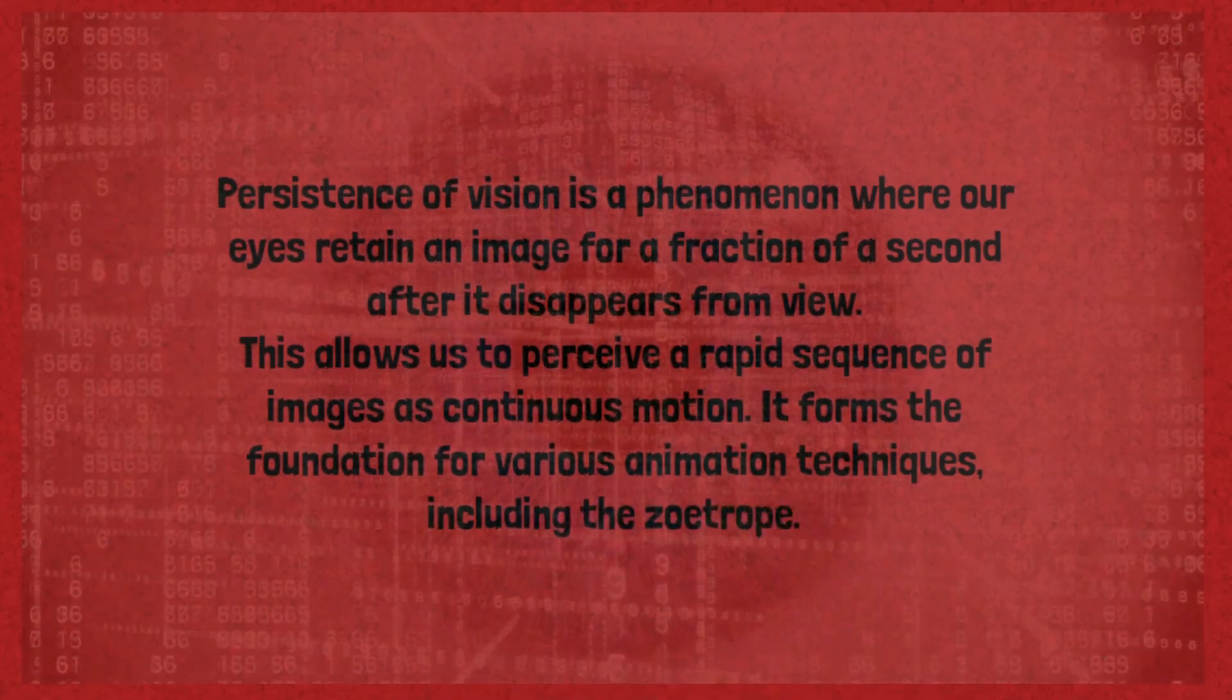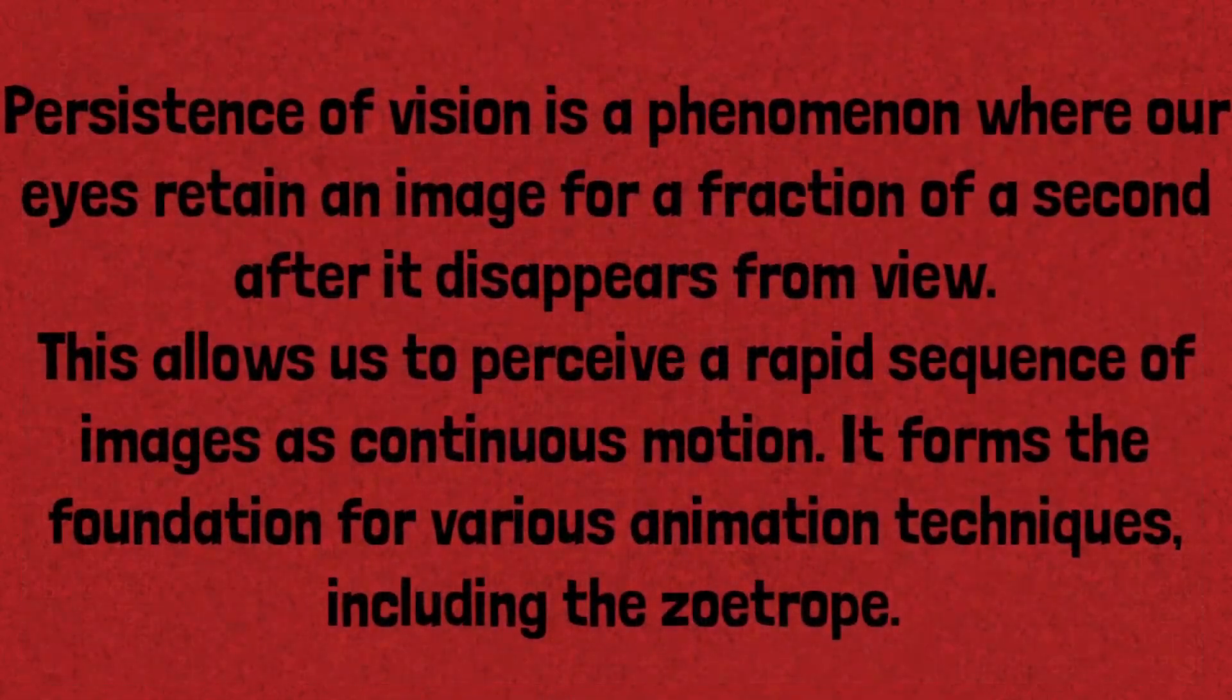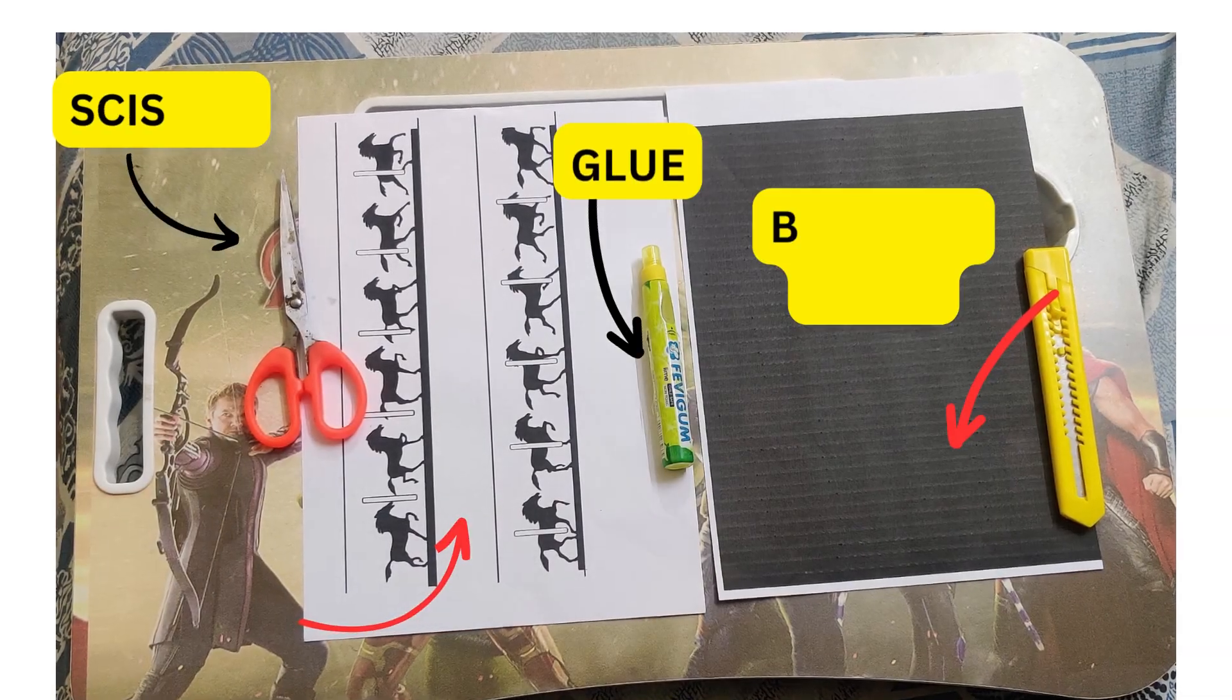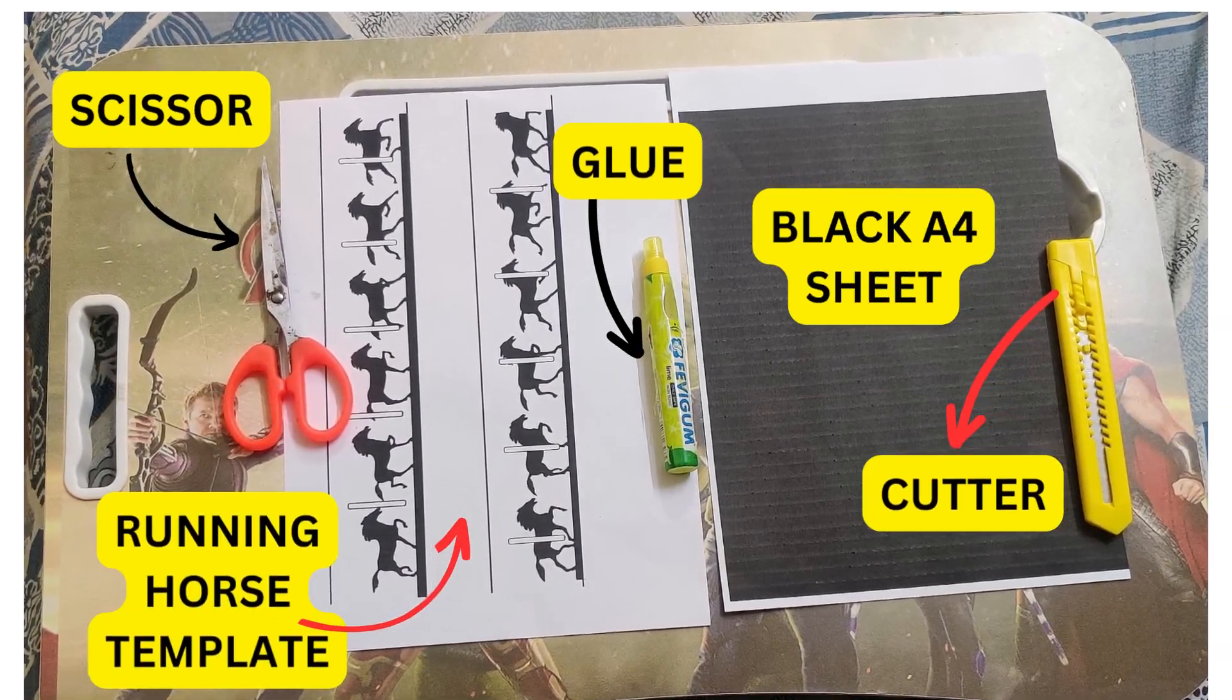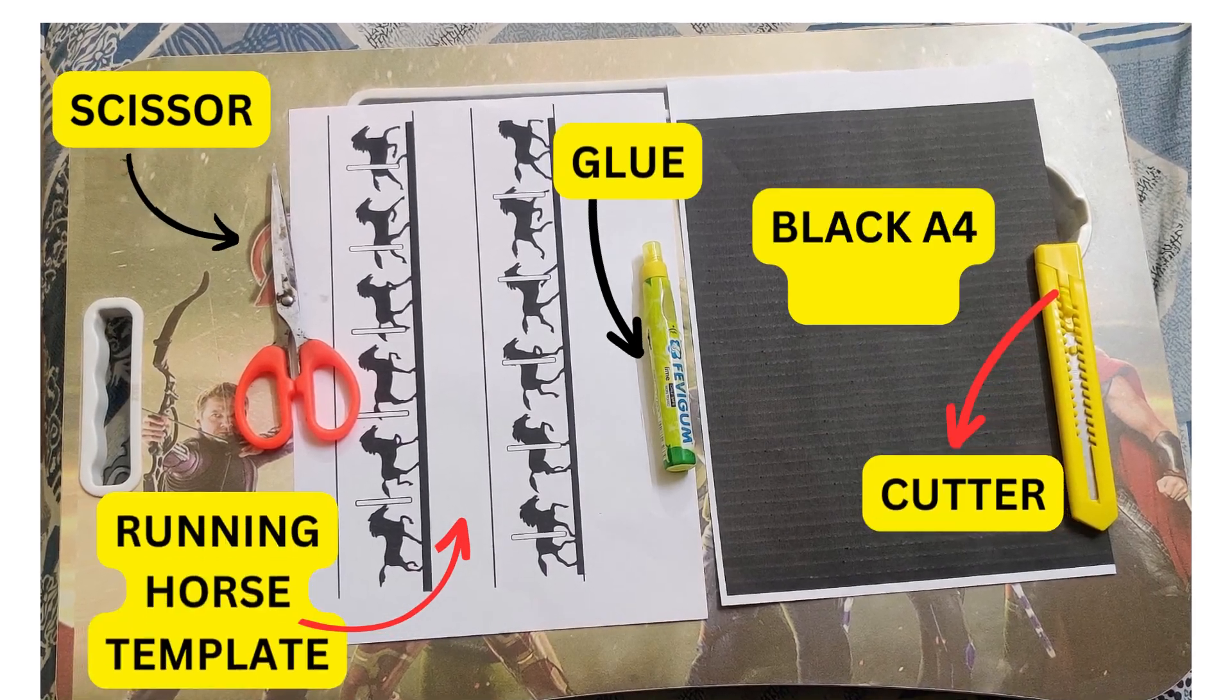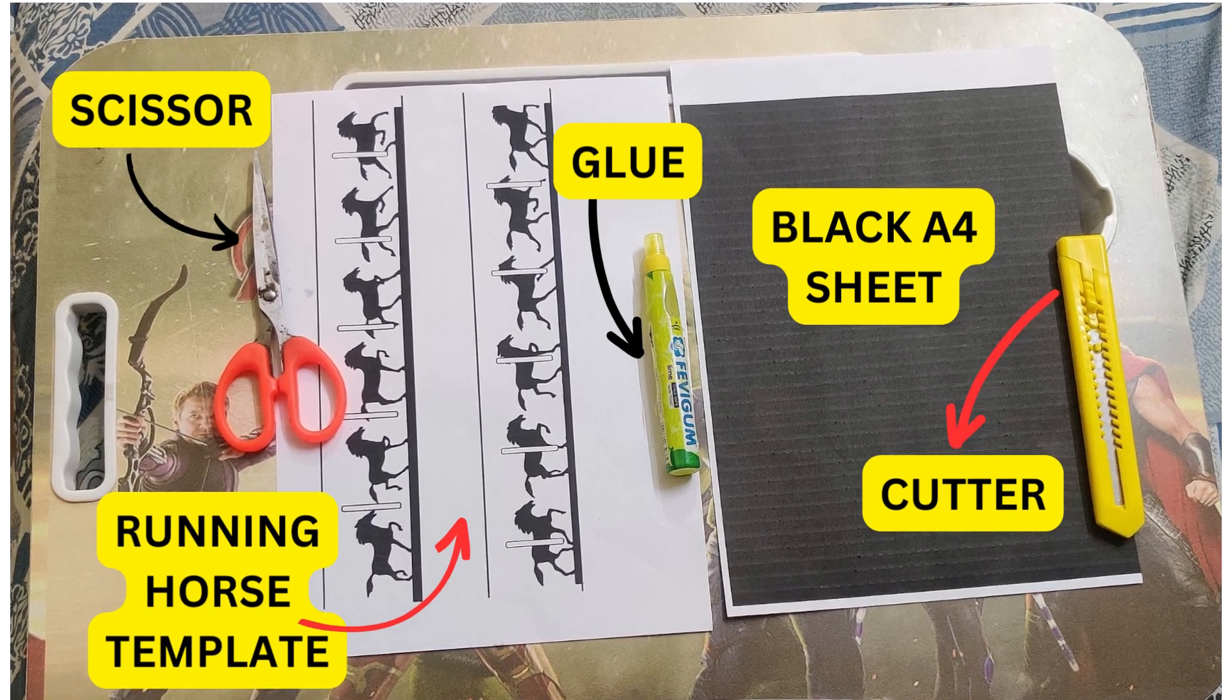Now friends, let's jump right into creating our own zoetrope experiment featuring the running horse. Here is what you all need: one running horse template printout, cutter, black A4 sheet paper, scissor, and glue.